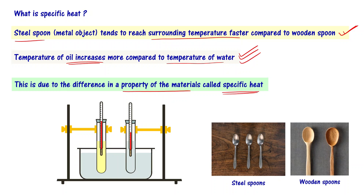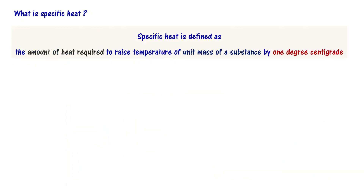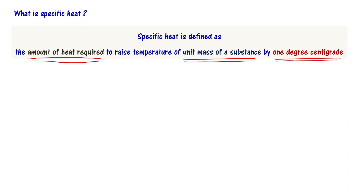Now let us understand what specific heat is. Specific heat is defined as the amount of heat required to raise the temperature of unit mass of a substance by one degree centigrade. We want to give one number to every material — for example, this material has specific heat 10, and this material has specific heat 5.